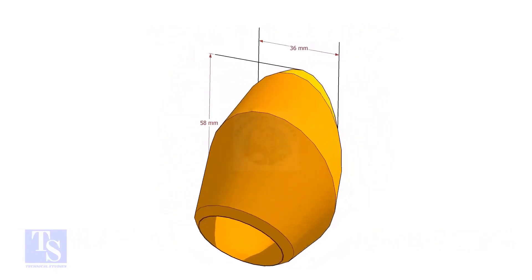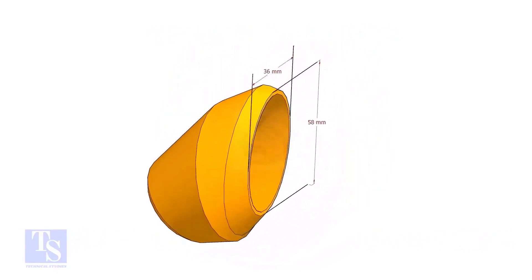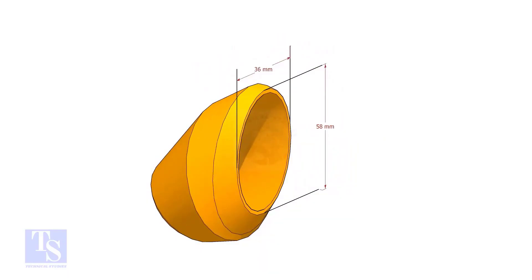The bottom opening size of the elbowlet is 36mm by 58mm. Please note down these dimensions.